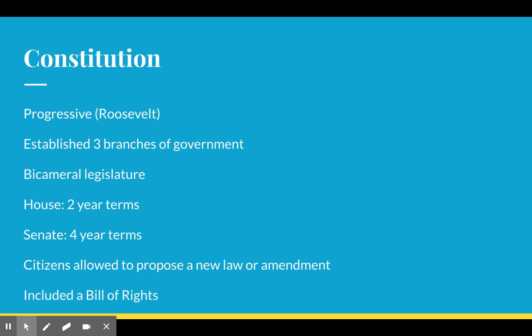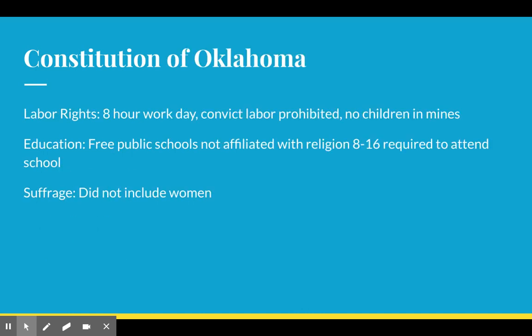So progressive in many ways, but also from a 2020 perspective, not going to be something totally viewed as super progressive today. Like we said: labor rights, eight-hour work day, convict labor prohibited, no children in mines — all written into the constitution of Oklahoma. Free public schools, not affiliated with religion, ages eight to sixteen required to attend, which has since been pushed to eighteen.